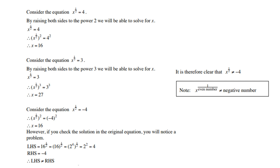However, if you check the solution in the original equation, you'll notice a problem. The left-hand side: sixteen to the power of a half equals two to the power of four to the power of a half, which is two squared, which is four. But the right-hand side is negative four. So the left-hand side does not equal the right-hand side. Please take note of this exception.